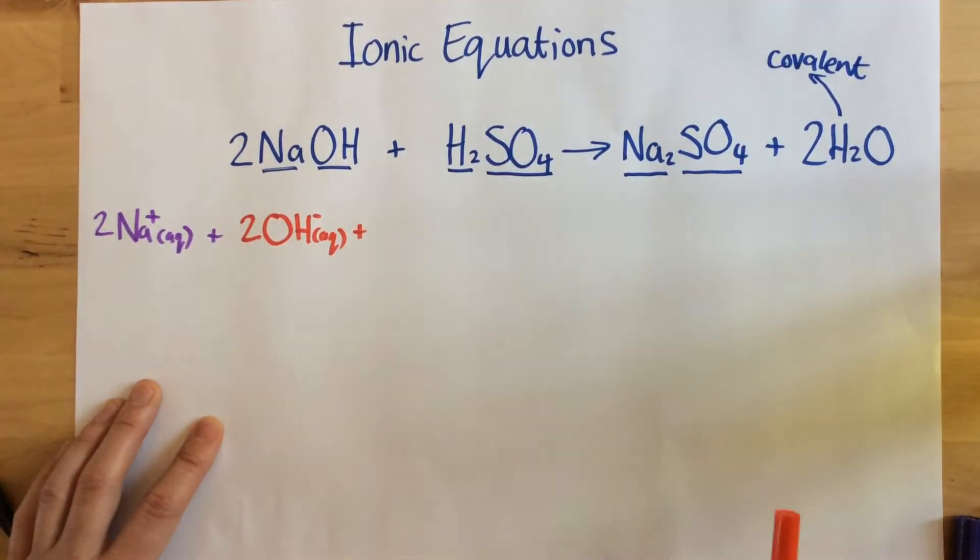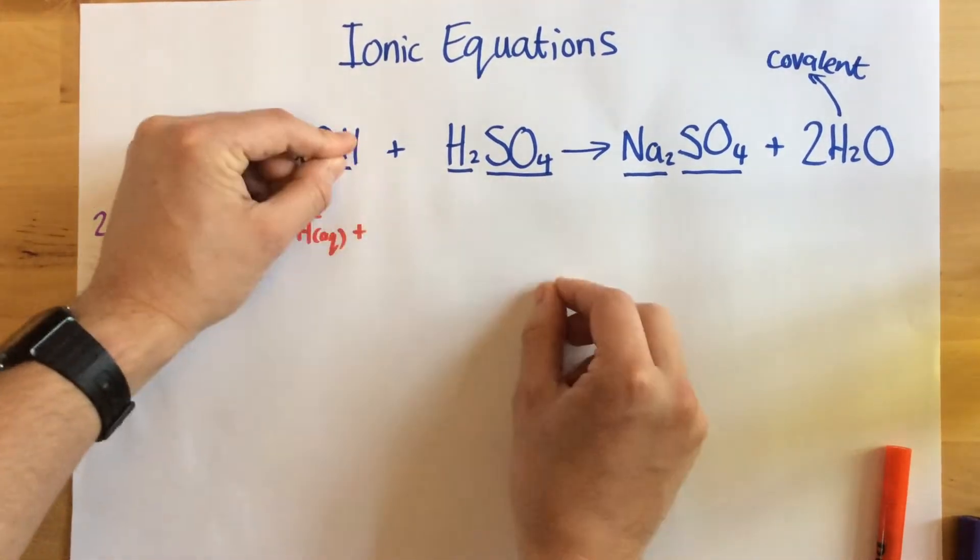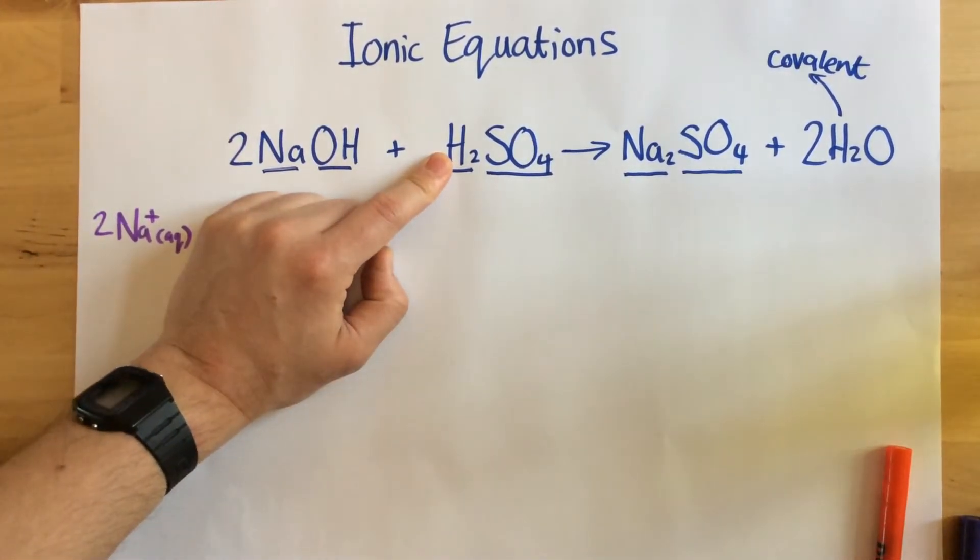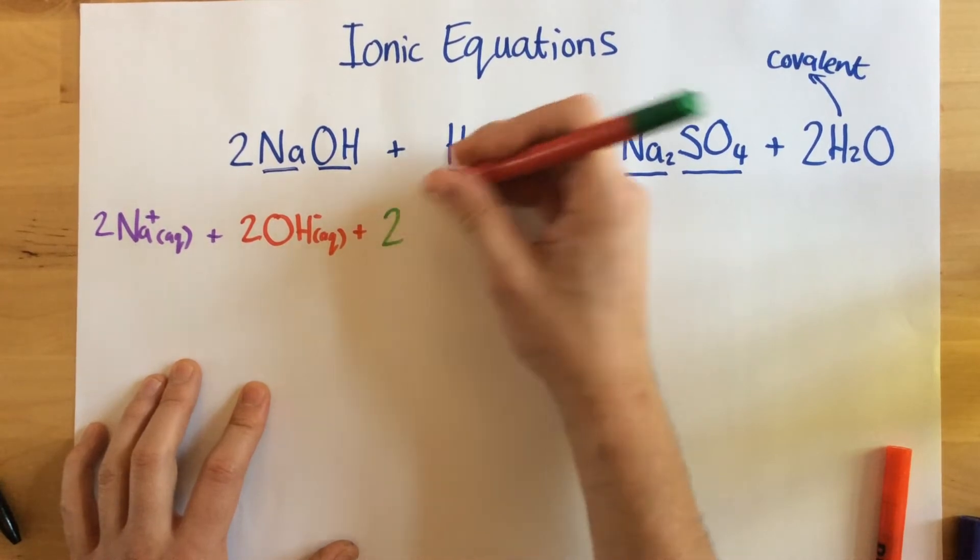Next up, we've got our H's. Now in solution, because we've got two here, this means we're going to have, when this dissolves, we're going to have two hydrogen ions. So hydrogen forms H+ ions.